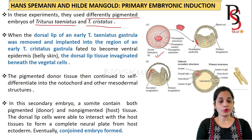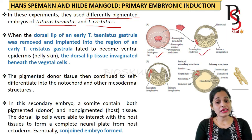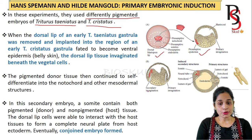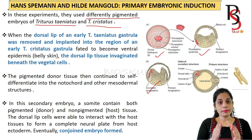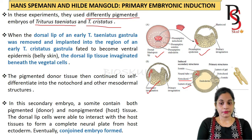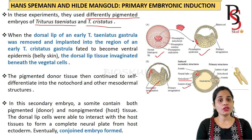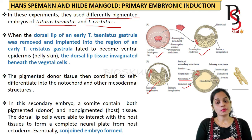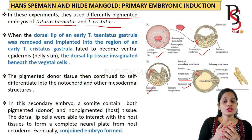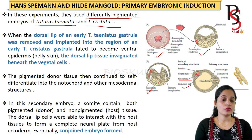He took the dorsal blastoporal lip from the early Triturus taeniatus gastrula and implanted it into the region of an early Triturus cristatus gastrula that would become the ventral epidermis. The dorsal blastoporal tissue invaginated beneath the vegetal cells, and the pigmented donor tissue continued to self-differentiate into notochord and mesodermal structures. In the secondary embryo, the somites contained both pigmented donor tissue and non-pigmented host tissue. The dorsal lip cells interacted with host tissue to form a complete neural plate from the host ectoderm, resulting in formation of a conjoined embryo.